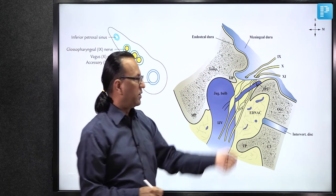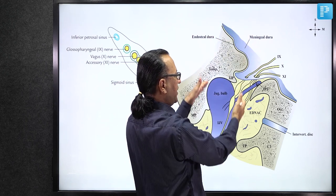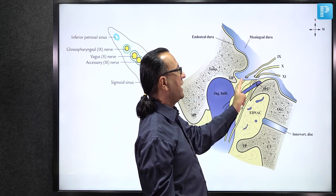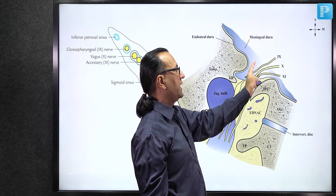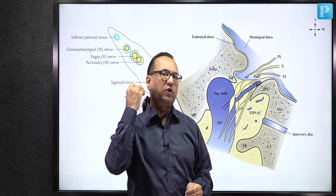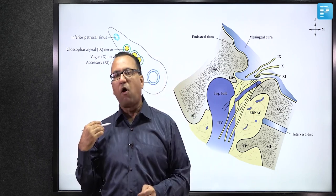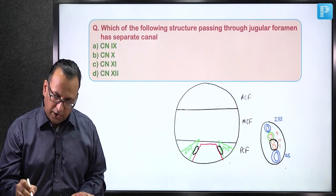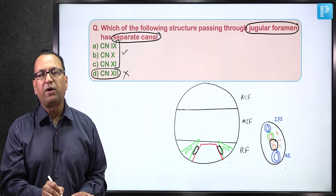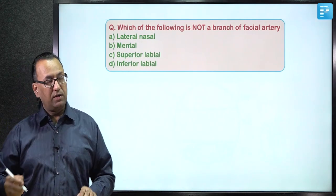Involvement of cranial nerves 9, 10, and 11 in a glomus tumor causes difficulty with speech and swallowing (palate, pharynx, larynx control). Compromise of the 11th nerve's spinal accessory component causes difficulty turning the neck to the opposite side and difficulty shrugging the shoulder (sternocleidomastoid and trapezius). Coming back to the question: the structure with a separate canal in the jugular foramen is cranial nerve 9. Answer: Choice A.